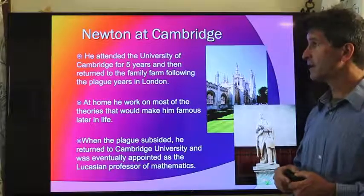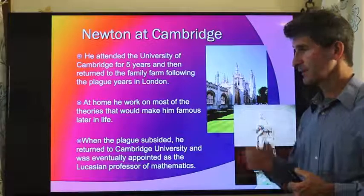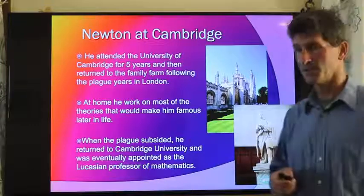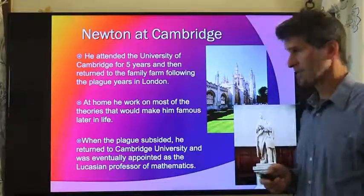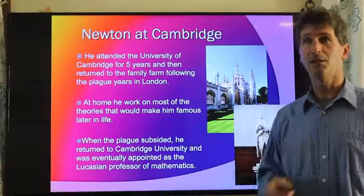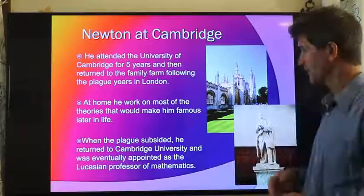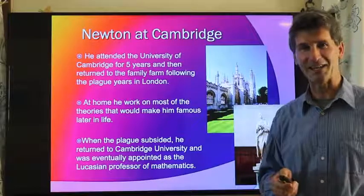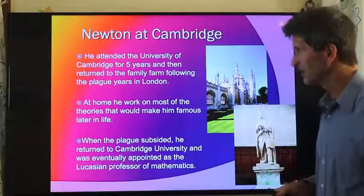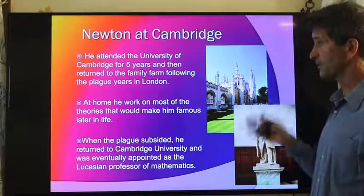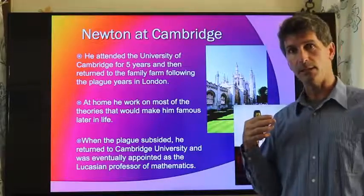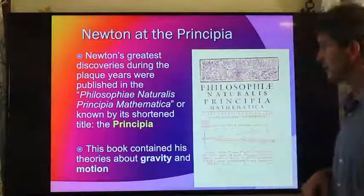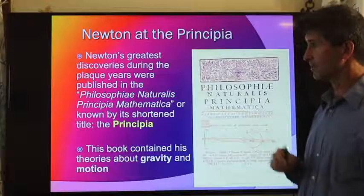Newton started as a student. Like many very promising students, he was asked to stay on as a faculty member. And five years after he started, Newton is forced to go back to his family farm because London is under a plague. Basically, if you had money, Newton had money, you could go to the countryside where you were safe from the plague. If you didn't have money and you were in London, things were just about waiting it out and hoping that you didn't die from the plague. He's sent back to the family farm for two years where he does work, and he makes most of his discoveries there. When the plague subsided, he returned to Cambridge.